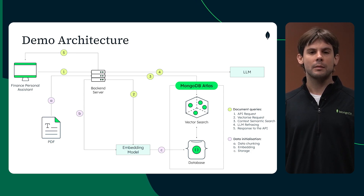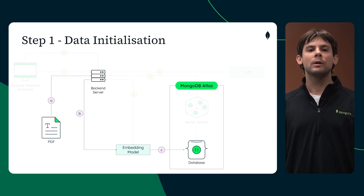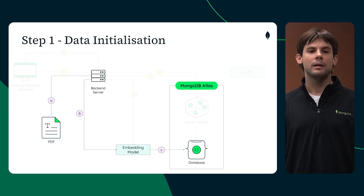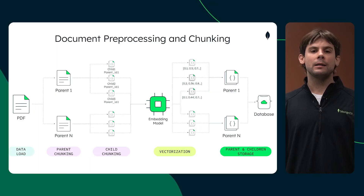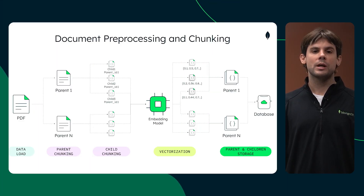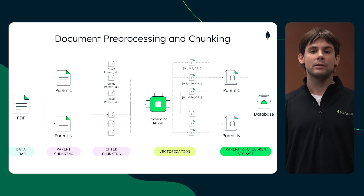Let's break down what's happening step by step. The initial step involves processing and transforming the text-based unstructured data — in our case, the Leafy Bank terms and conditions PDF — that will serve as the source for answering customer queries. The document is divided into N chunks which are stored in MongoDB. A custom script scans the document, creates the chunks, and vectorizes them.